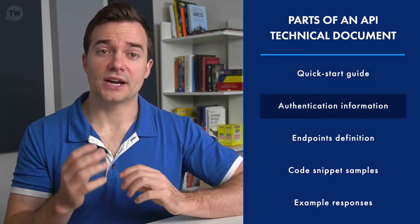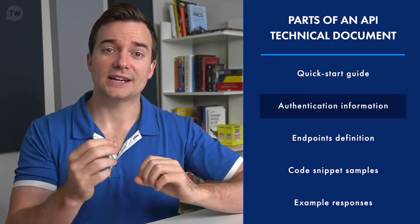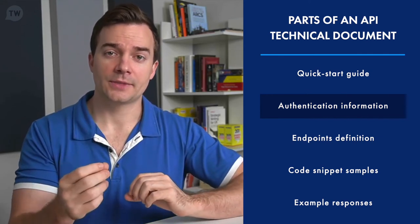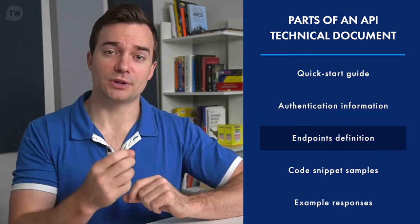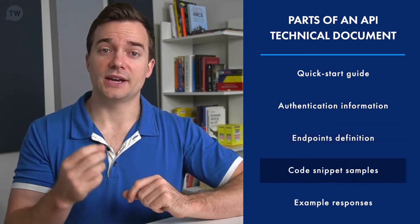Also some authentication info that explains how the API will certify user identity when you access the API's functions, as well as a definition of all the endpoints and an explanation of what each endpoint does, as well as some code snippet examples.